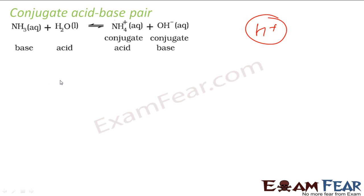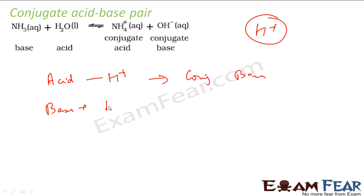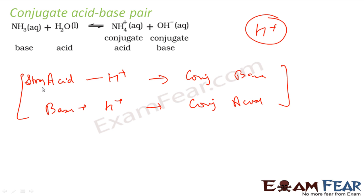They differ only by H+. Acid will give H+ and you get the conjugate base; base will take H+ and you get the conjugate acid. If the acid is strong, the conjugate base becomes weak. If the acid is weak, the conjugate base becomes strong. For example, NH3 is a weak base — it is not eager to take H+, but somehow it took H+. Now this becomes a conjugate acid, and this guy will be more eager to give H+ back, so it becomes a strong conjugate acid.